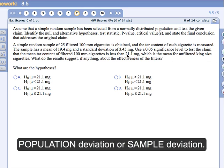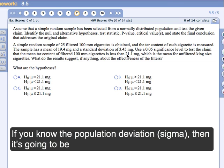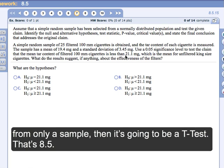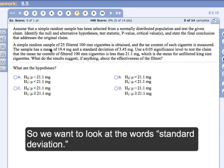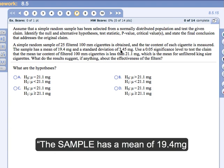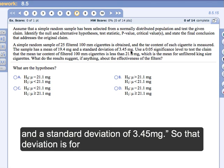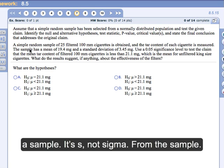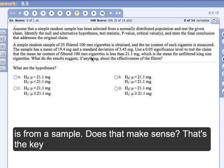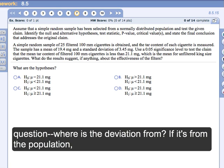It's 25 filtered cigarettes, and then it says the sample has a mean of 19.4 mg and a standard deviation of 3.45. Now this is the big thing, because we know that we're testing a claim about a mean, so we know it's 8.4 or 8.5. The difference between the two is the question of whether we know population deviation or sample deviation. If you know the population deviation sigma, then it's going to be a z-test, 8.4. But if we know the deviation from only a sample, it's going to be a t-test, that's 8.5. So we want to look at the word standard deviation. Where does this deviation come from?